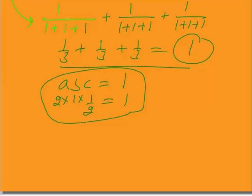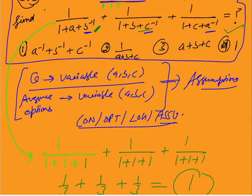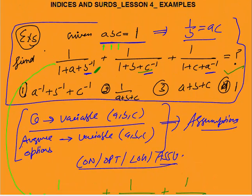You can see that with the assumption method, I can solve this question in an exam in 20 seconds without going by the conceptual way. Very important: whenever variables abc appear in both the question and the answer choices, you can always use assumption. In the next class I will continue with more videos on Indices and Surds. Thank you.